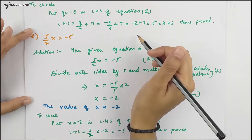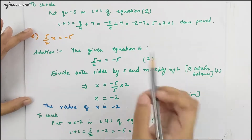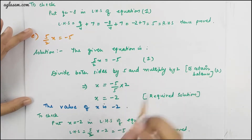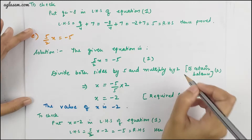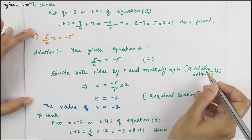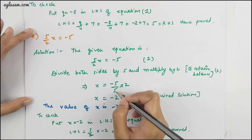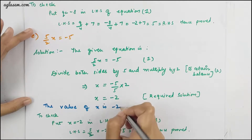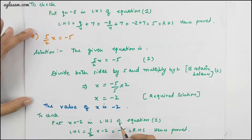The E part is (5/2)x = −5. Here, divide both sides by 5 and multiply by 2 to retain balance. So x = (−5/5) × 2 = −2. To check, put x = −2 into the LHS of the equation — that equals the RHS. Hence proved.